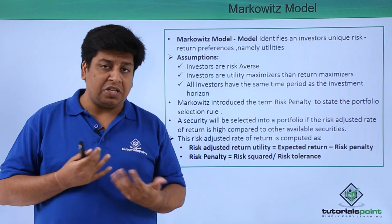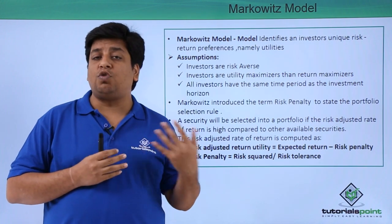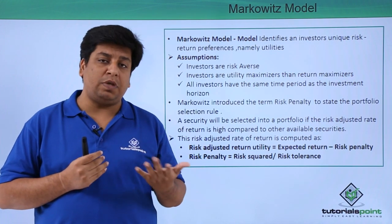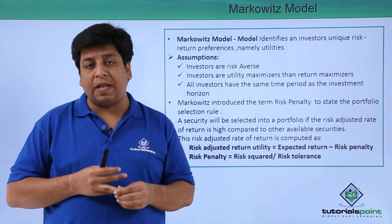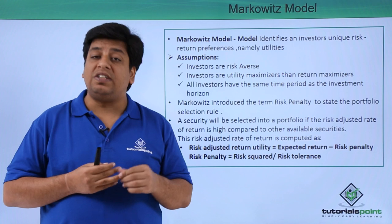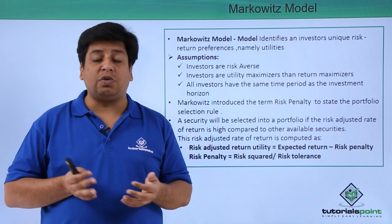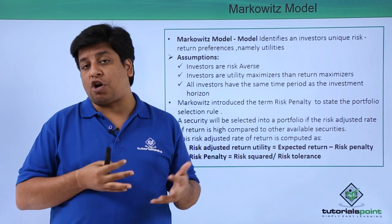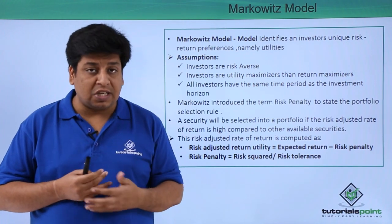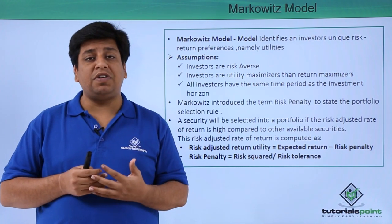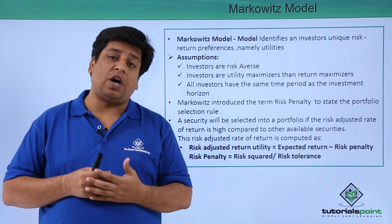If there is equal weightage, the simple average method will also work. By calculating the weighted average of those stocks, I can determine what my average return from the portfolio would be. But the same approach cannot be applied when talking about risk. We cannot simply say that the weighted risk of stock A and stock B combined would be the portfolio's risk — we cannot claim that. Hence, we need a different approach for calculating the risk of a portfolio.